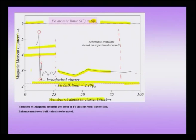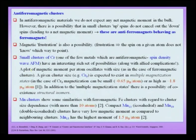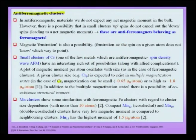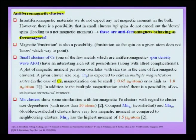Now let us talk about anti-ferromagnetic clusters. Chromium and manganese are among the few elements that are anti-ferromagnetic in the bulk. However, when making small clusters out of these anti-ferromagnetic bulk materials, we actually obtain ferromagnetic properties. This is a very interesting observation, because these materials do not behave like ferromagnets in the bulk — in anti-ferromagnetic materials we do not expect any net magnetic moment because the up spins and down spins cancel each other out.